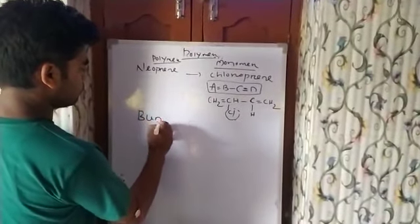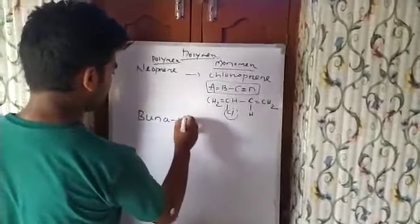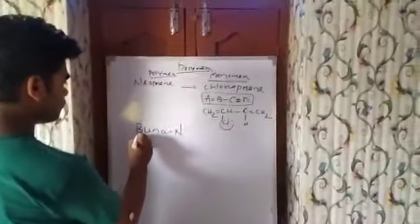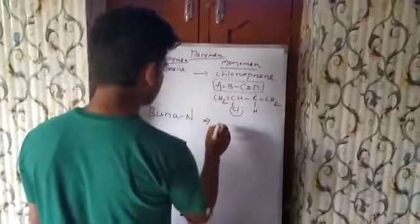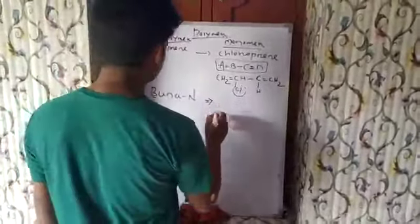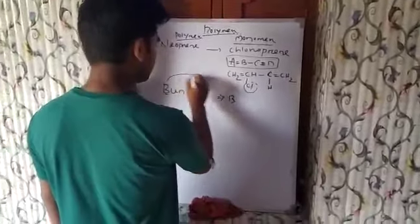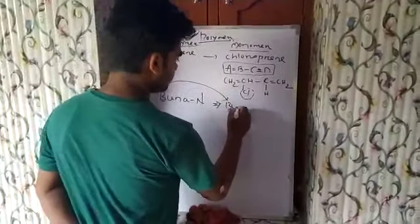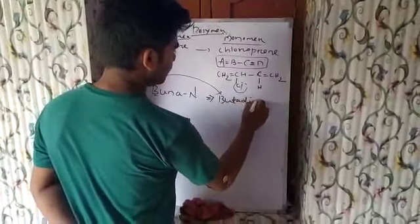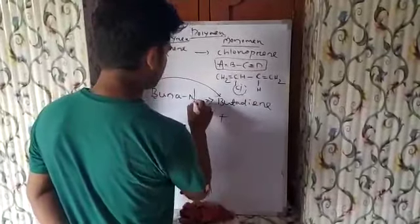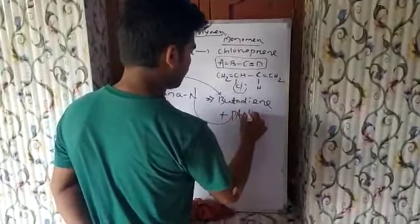Next, polymer is Buna N. What are the monomers? Two monomers are present. B for butadiene and N for acrylonitrile.